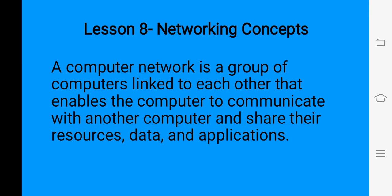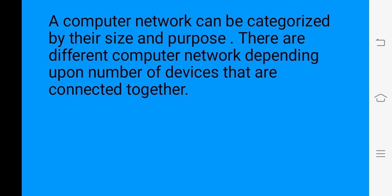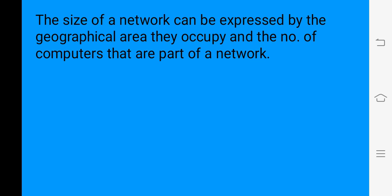A computer network is a group of computers that are connected with each other and we can communicate with one another, share our resources, share data, and application programs with others. A computer network can be categorized on the basis of size and purpose. There are different types of computer network available that depend upon the number of computers and devices connected, and the size of the network can be expressed by the geographical area they occupy and the number of computers that are part of the network.